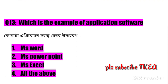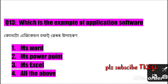Question number thirteen: Which is an example of application software? Option one: MS Word, two: MS PowerPoint, three: MS Excel, four: all of the above. The right answer is number four: all of the above.